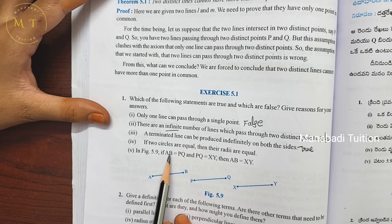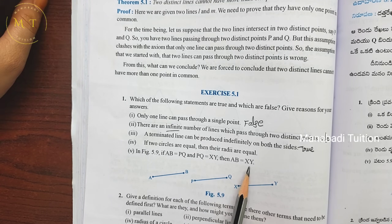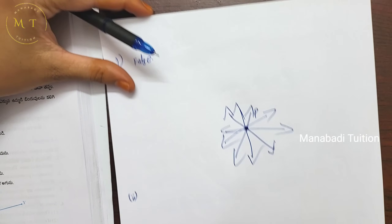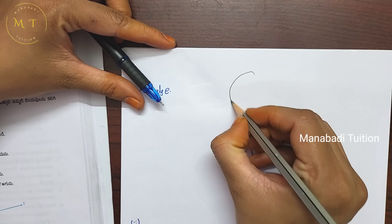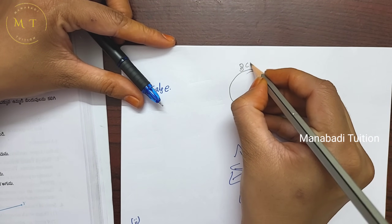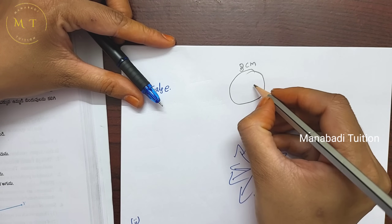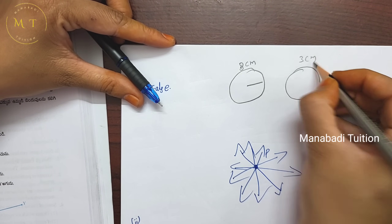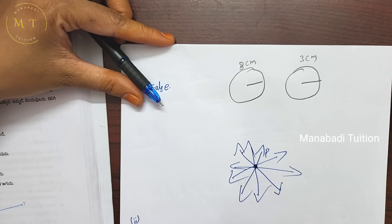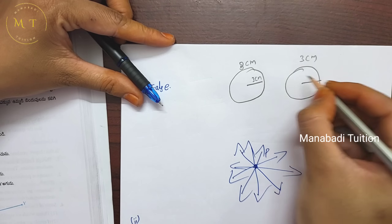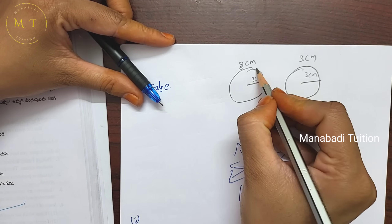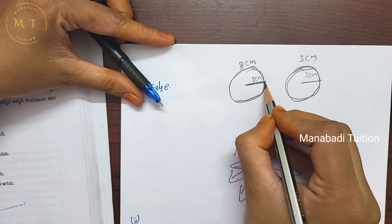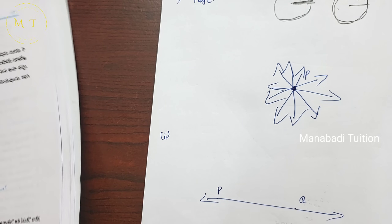Fourth statement: if two circles are equal, then their radii are also equal. If two circles are equal — say both drawn with 3 cm radius — then automatically the radii are equal. So the fourth statement is true.